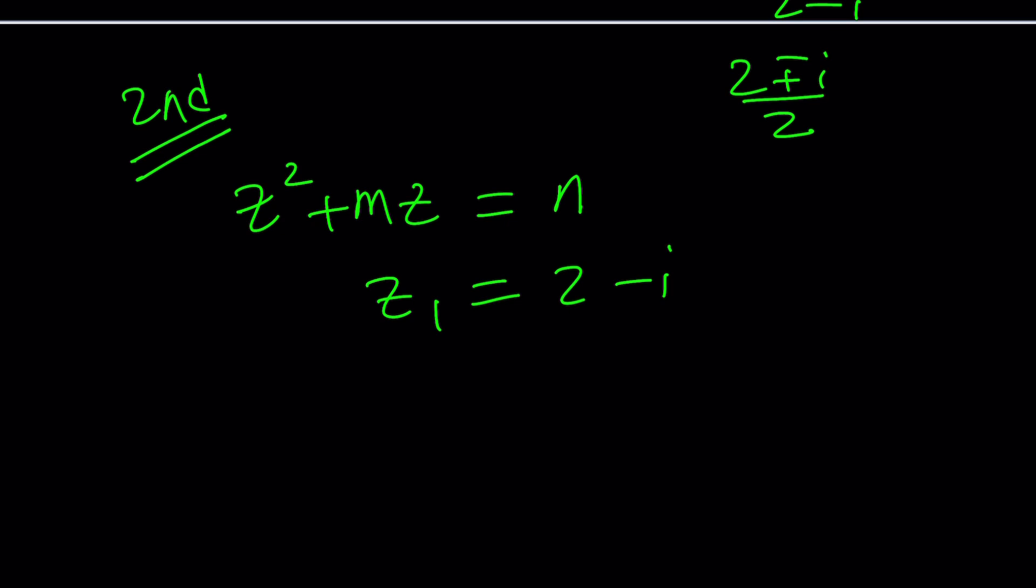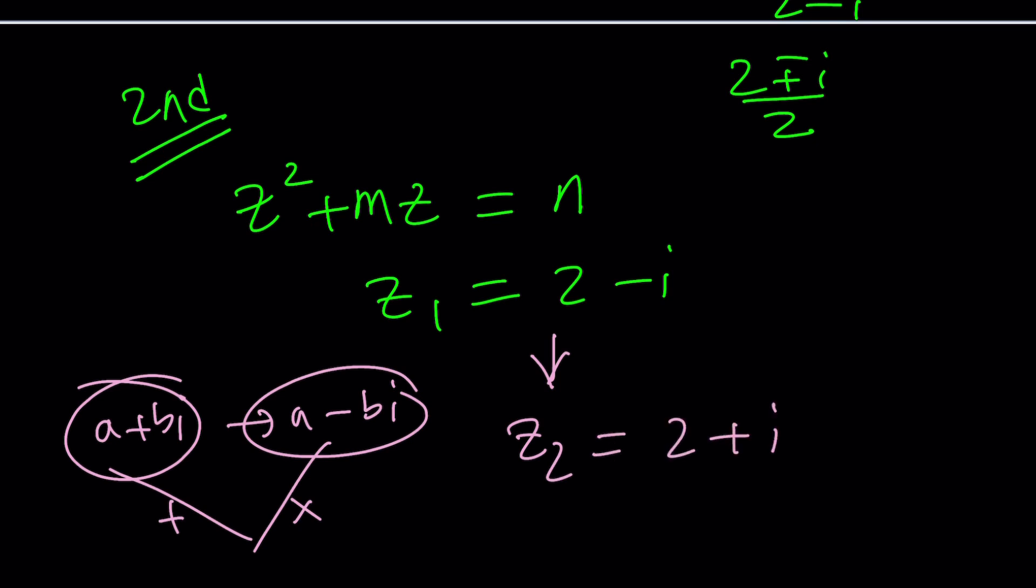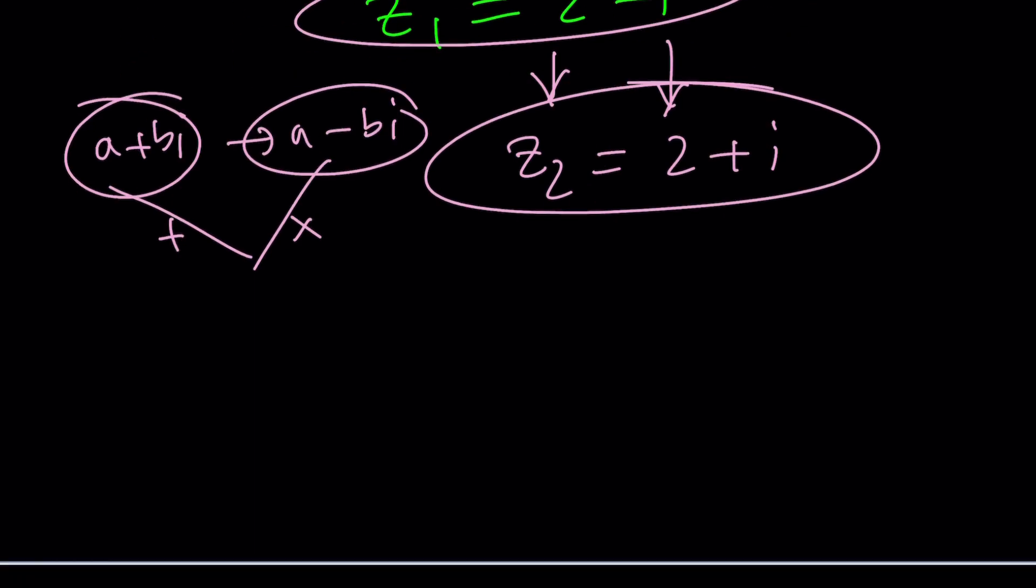One of the solutions is 2 minus i. This is a critical piece of information. If you have an equation with real coefficients, the complex roots are complex conjugates. The non-real complex roots, I mean. In other words, if a plus bi is a solution, then a minus bi is also a solution. From Vieta's formulas. If you add these, you get a real number. If you multiply them, you get a real number. And so, if z sub 1 is 2 minus i, z sub 2 should be 2 plus i, which is the complex conjugate of 2 minus i.